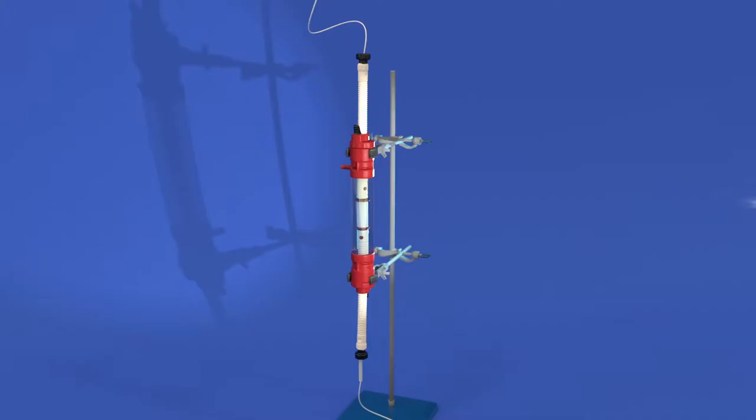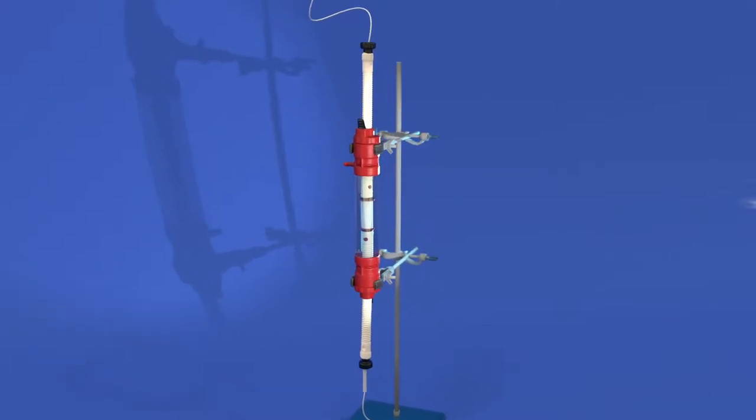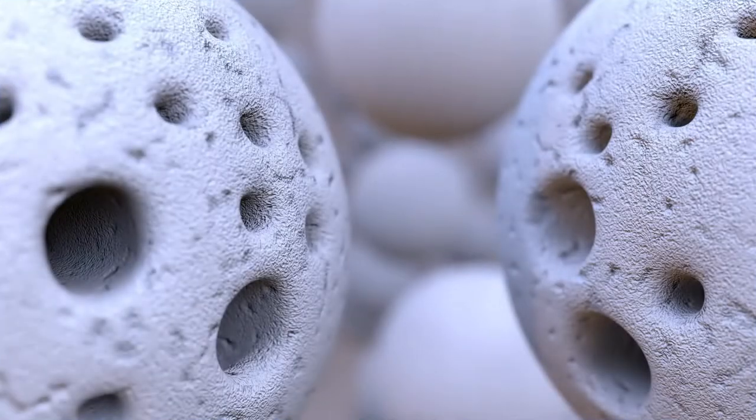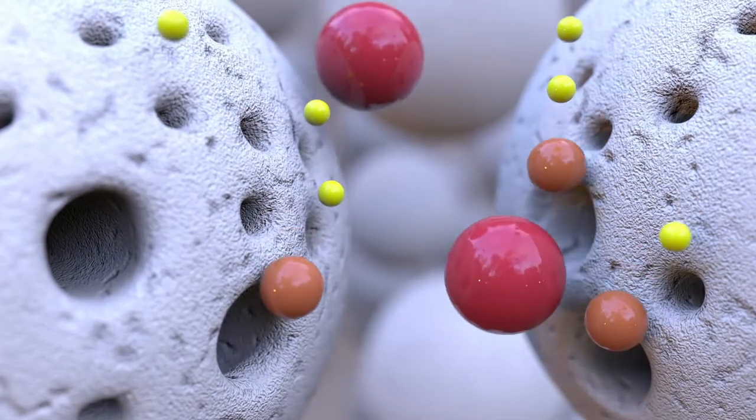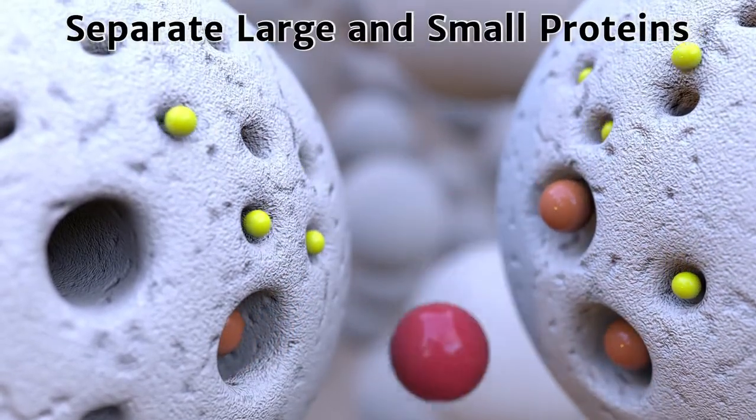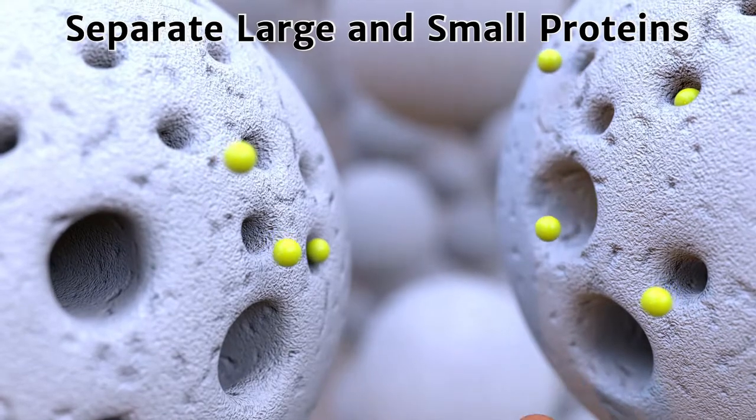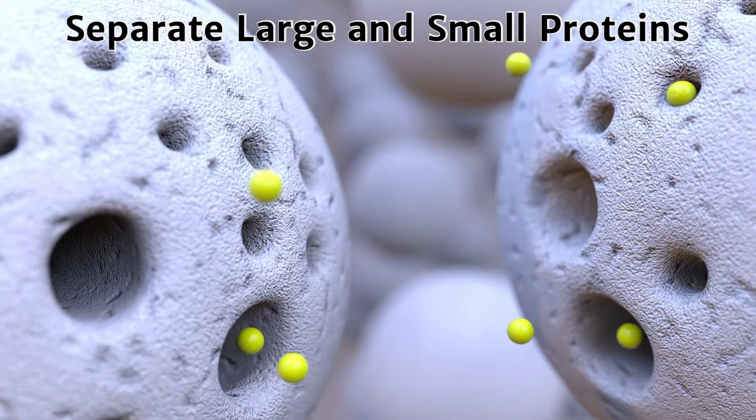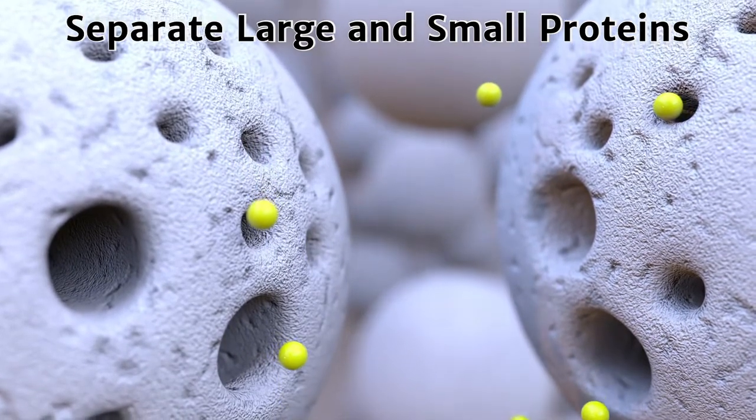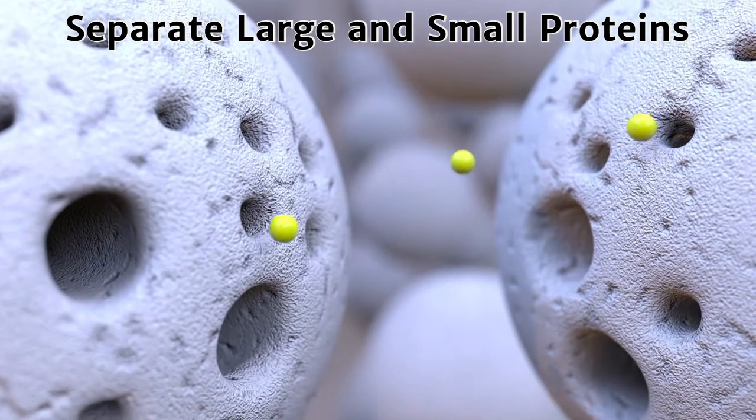Size exclusion chromatography is accomplished using resins comprised of beads having specific pore sizes. Based on the size of the pores, small proteins are retained within the beads while larger proteins pass through the column. Using this principle, larger proteins can be separated from smaller ones.